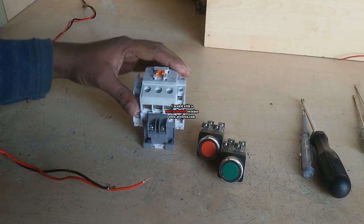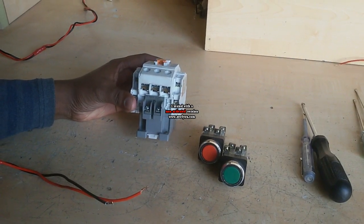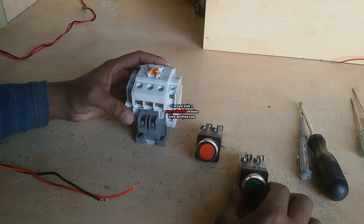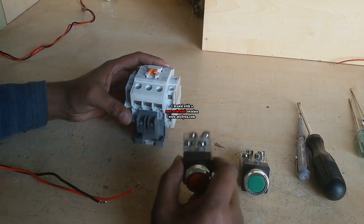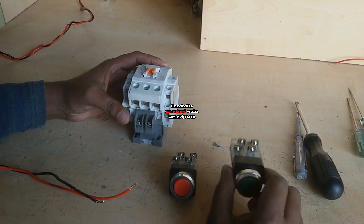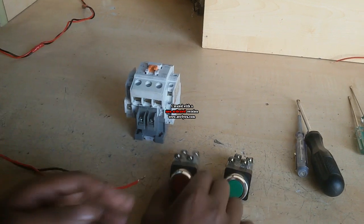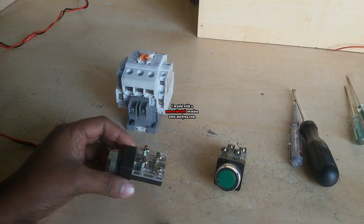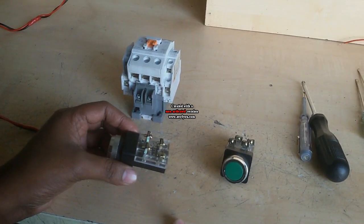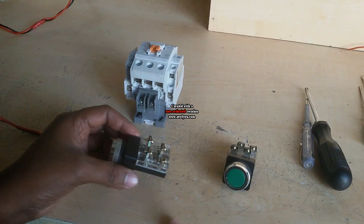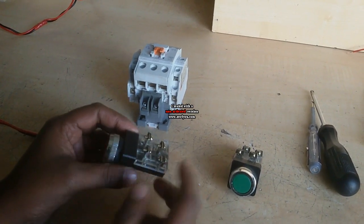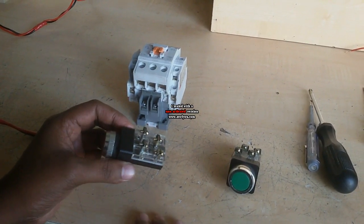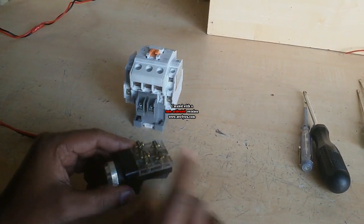We need for this work one magnetic contactor and two push button switches. One is stop push button and other is start push button. This push button switch has four terminals but we can use two terminal push button switch. In this option, stop push button is NC. We use NC and start push button switch.